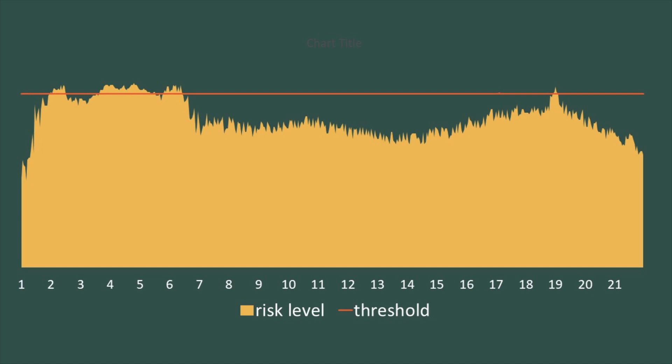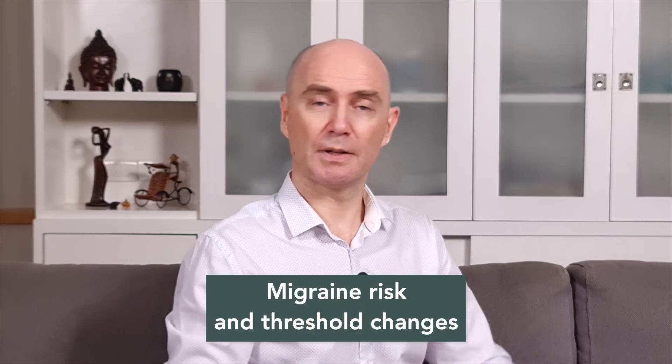Let's now focus on the migraine threshold. Quick reminder: when migraine risk reaches the migraine threshold, brain receptors get upset, and they trigger migraine symptoms. The migraine threshold is tied to brain receptor sensitivity. The more sensitive the brain receptors, the lower the tolerance to upsetting migraine risk, and thus the lower the migraine threshold. The migraine threshold is unique to each of us — it is our maximum tolerance to migraine risk. It is naturally low or high, and should be quite stable over time.